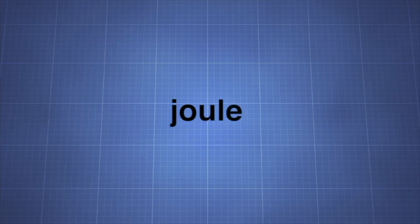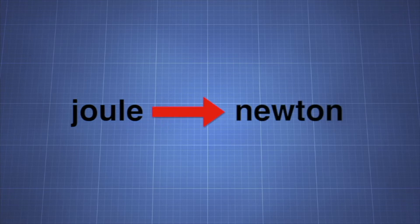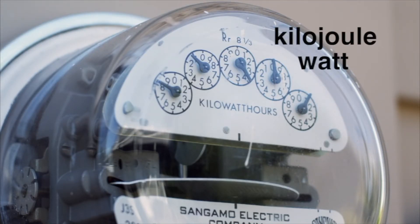The joule, the SI unit of energy, is also a derived unit. The joule is derived from the newton, the SI unit of force, and the meter, the SI unit of distance. Other common SI units derived from the joule are the kilojoule and the watt.